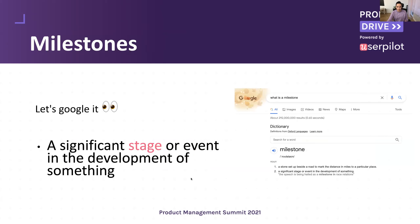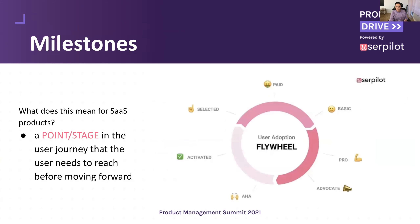Let's start with milestones. A simple definition: a milestone is a significant stage or event in the development of something. For a SaaS product, a milestone is a point or stage in the user journey that the user needs to reach before they can move forward. At Userpilot, we define the user journey through roughly seven main steps they need to reach — the aha moment, activated, selected — we'll go into this a bit later.